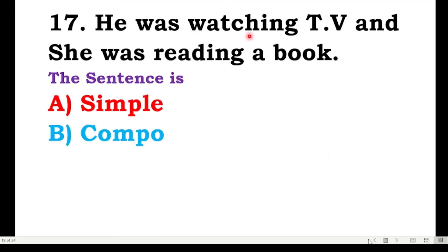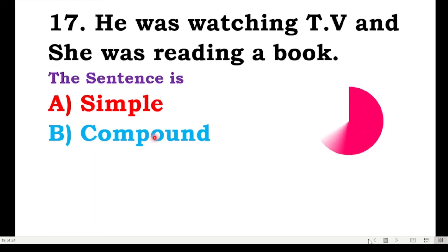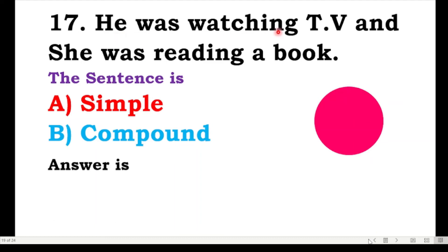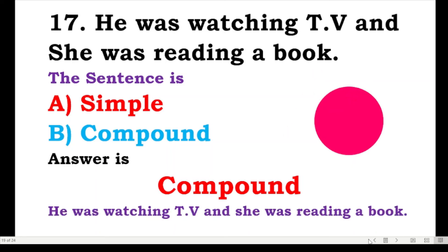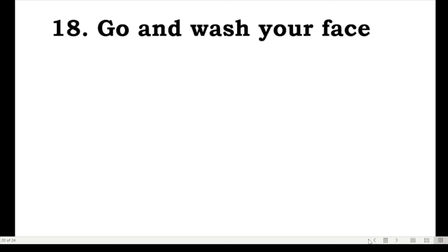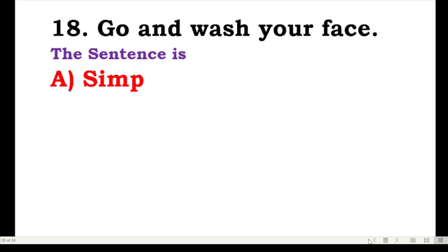He was watching TV and she was reading a book — simple or compound? This is a compound sentence because you have two independent clauses. 'He was watching TV' and 'she was reading a book' — two independent sentences joined together, making it a compound sentence.